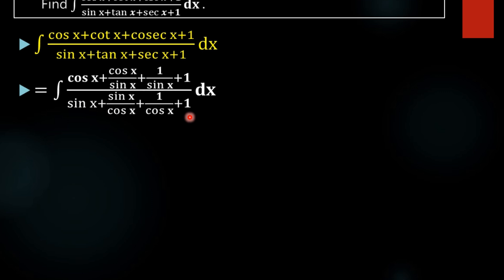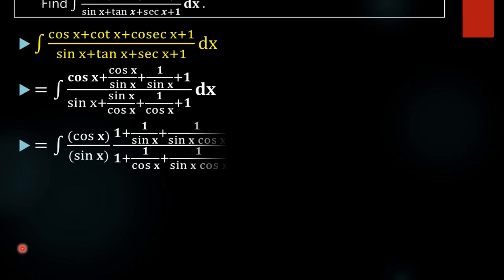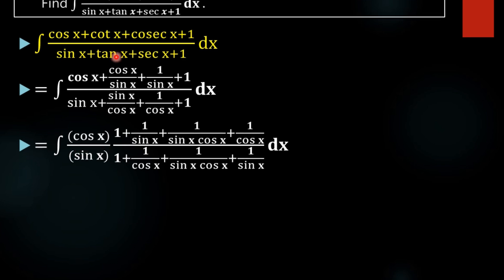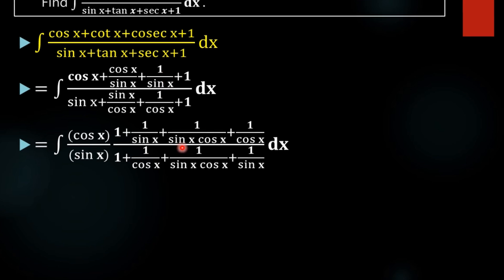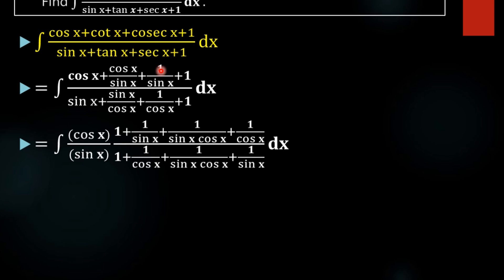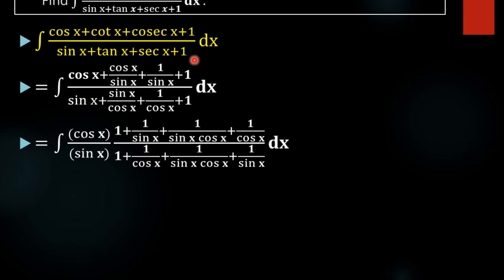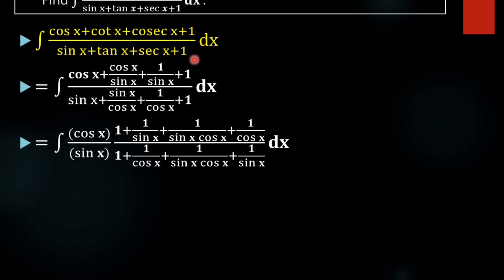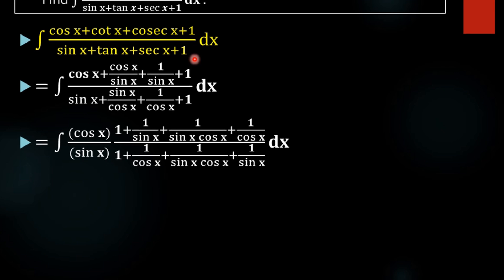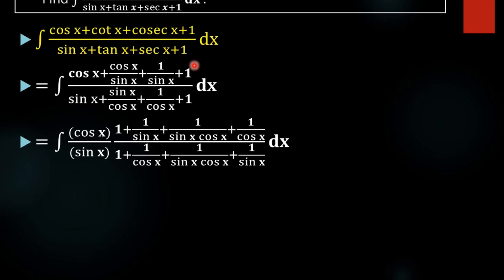In the next step, we take cosx outside from the numerator. On taking cosx outside, the numerator terms become: 1, then 1/sinx, then cosx (from sinx·cosx), and treating 1 as cosx/cosx leaves 1/cosx remaining.